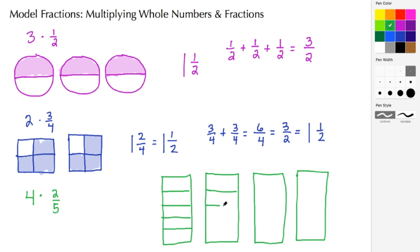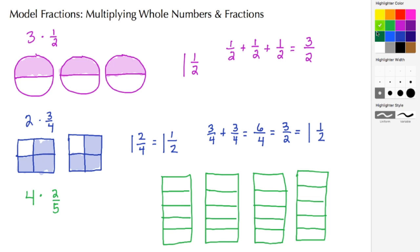As we do that for each rectangle, we're really changing these into fifths. When we refer back to the fraction, the fraction tells us that we need to shade in two out of the five pieces. So let's go ahead and shade in two out of the five — two, two, two, and two.